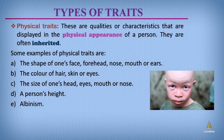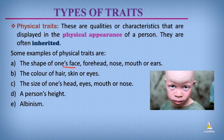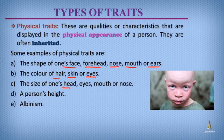Physical traits are traits that are displayed in the physical appearance of an individual. These traits are often inherited. Some examples of physical traits include the shape of one's face, forehead, nose, mouth, or ears; the color of one's hair, skin, or eyes; the size of one's head, eyes, mouth, or nose; a person's height; and lastly, albinism.